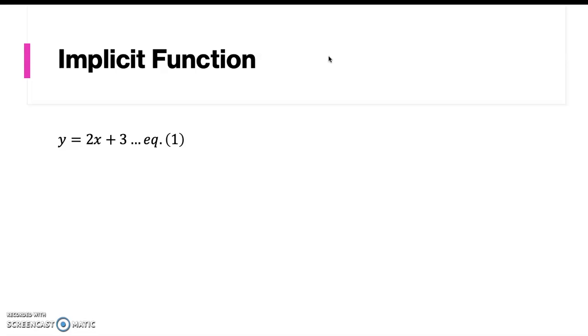We can rearrange the function and write it as this, where we no longer have an explicit function because in this form we don't know which one is the dependent or the independent function. Rather, equation 1 is implicitly defined by equation 2.